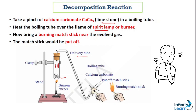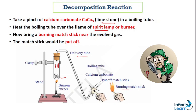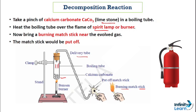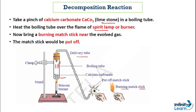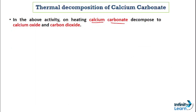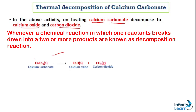Can you guess which gas this is? It is behaving like a fire extinguisher gas — and the gas we use in fire extinguishers is carbon dioxide. So on heating calcium carbonate, it decomposes to calcium oxide and carbon dioxide. Whenever in a chemical reaction the reactant breaks down into two or more products, it is known as a decomposition reaction. Calcium carbonate and calcium oxide are solids, and the gas produced is carbon dioxide.